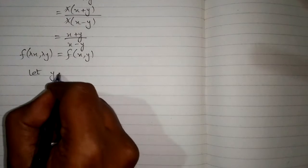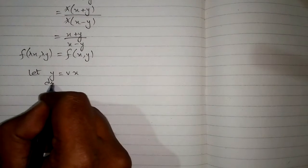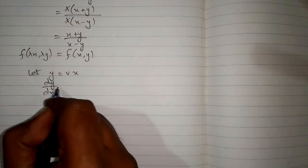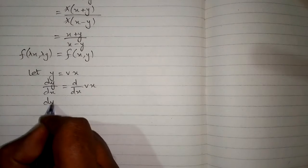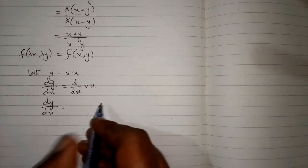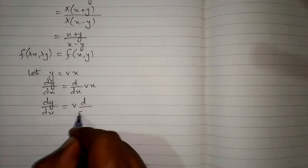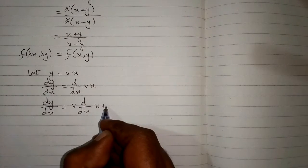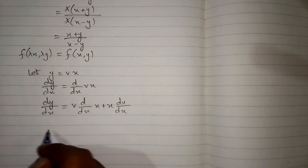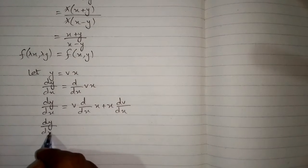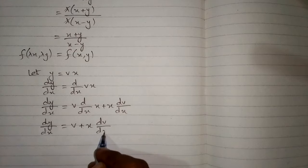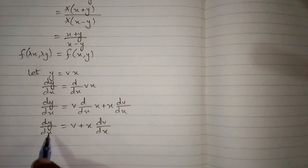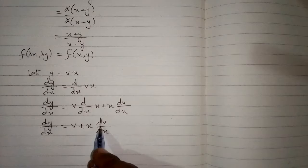To solve this differential equation we suppose y = vx. Then dy/dx = d/dx(v · x). Applying the product rule of differentiation, we get v times the derivative of x plus x times the derivative of v. Since the derivative of x is 1, dy/dx = v + x·dv/dx.